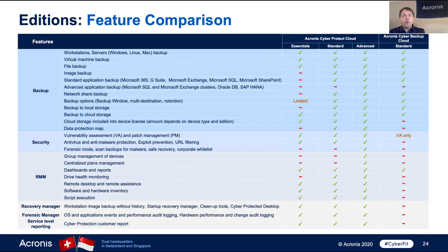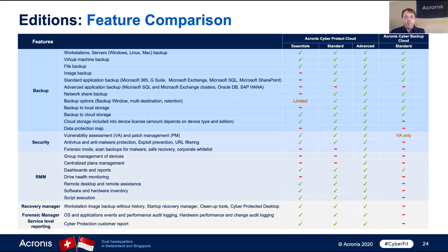We provide a feature comparison for you to go through, and I would encourage you to review it. In the Standard Edition column for Acronis Cyber Backup Cloud, you get all backup functionality shown in that column. Everything below that represents security, RMM tools, and so forth. There is one exception — dashboards and reports are also available for the Backup Standard edition.